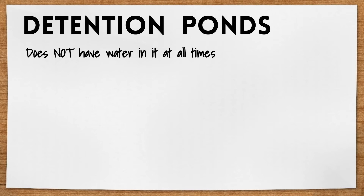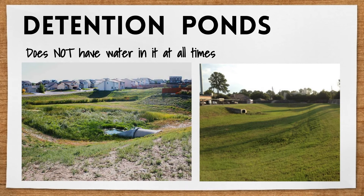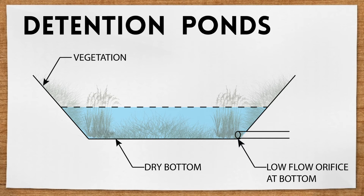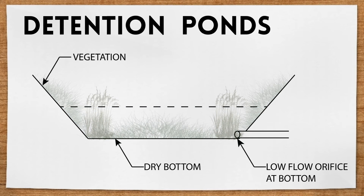On the other hand, a detention pond does not have water in it at all times. It's usually covered with some sort of vegetation that does well in both wet and dry environments and can look like a ditch when empty. Just like the retention pond, it also has a low flow orifice, but this time it's at the bottom of the pond, so as rainwater falls, it's already slowly releasing the stormwater back. During a storm, a detention pond can fill up and take on the appearance of a retention pond. But once all the stormwater is slowly released, it will go back to being a dry ditch, unlike the retention pond, which will always have water.